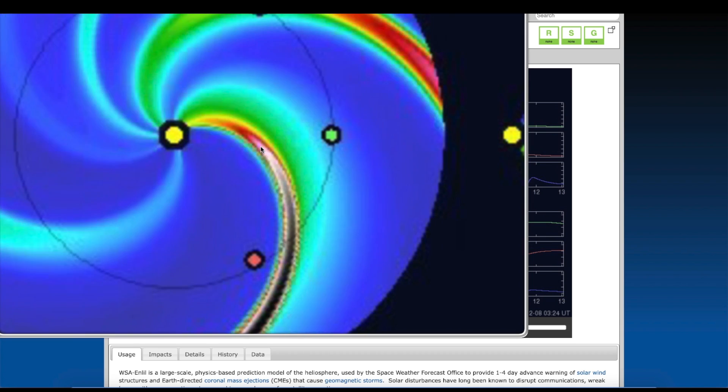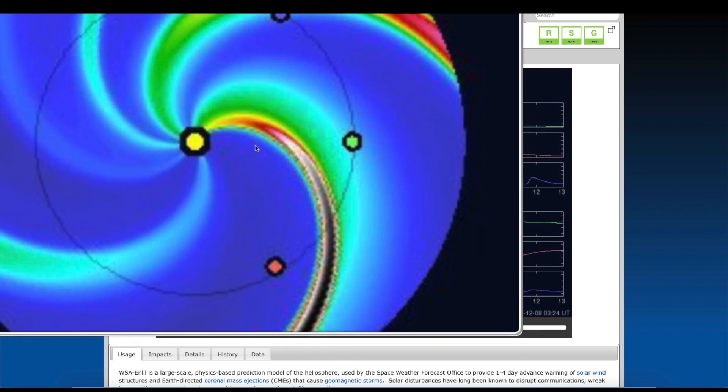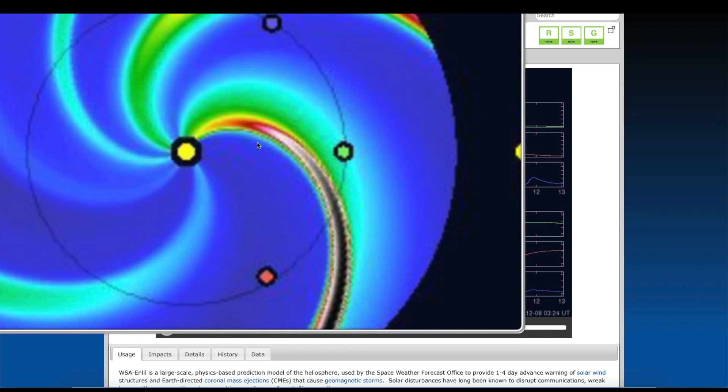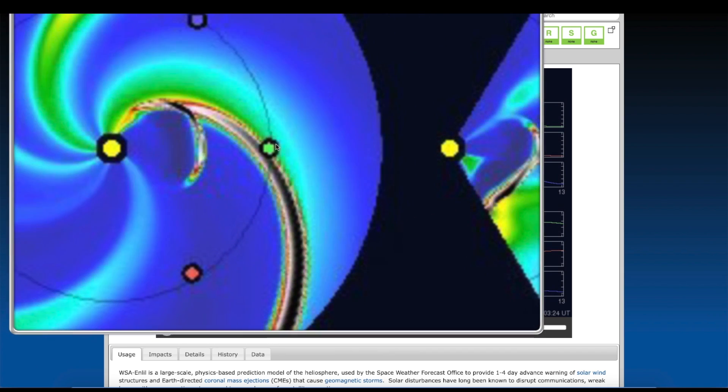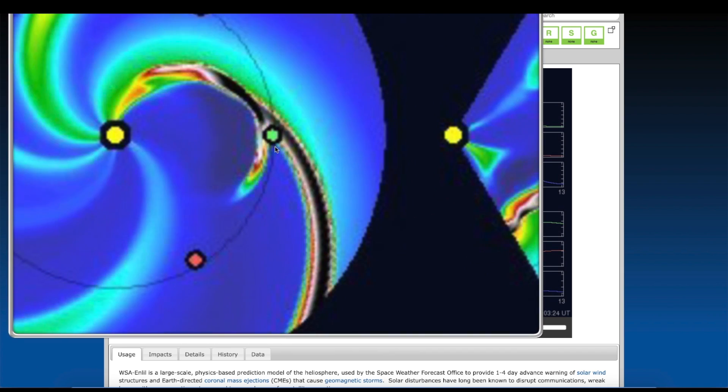Here you can see the solar flare come off of the Sun. This is known as the Antelope Spiral. Watch, you're going to see it come off very quickly. It was a long duration solar flare. This is Earth right here underneath my cursor.